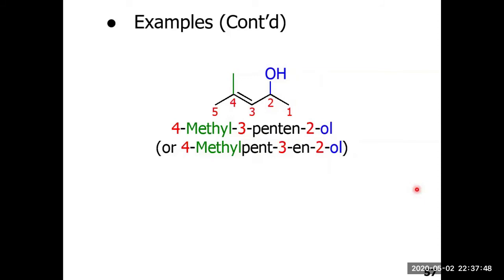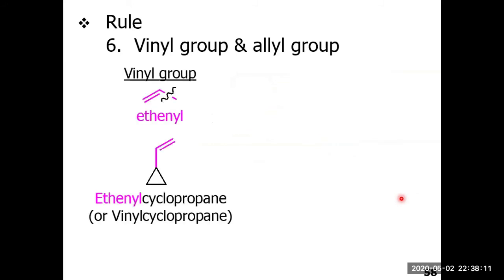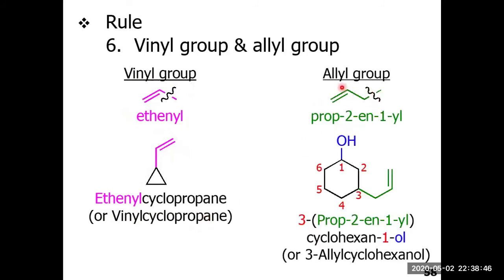Some groups appear frequently in organic nomenclature. The first is the vinyl group: CH2=CH–, also called an ethenyl group. So a molecule with this group can be named as ethenylcyclopropane or vinylcyclopropane. Another closely related group is the allyl group — CH2=CH–CH2–. This is similar to the vinyl group but with an extra CH2. The IUPAC name for the allyl group is prop-2-en-1-yl.